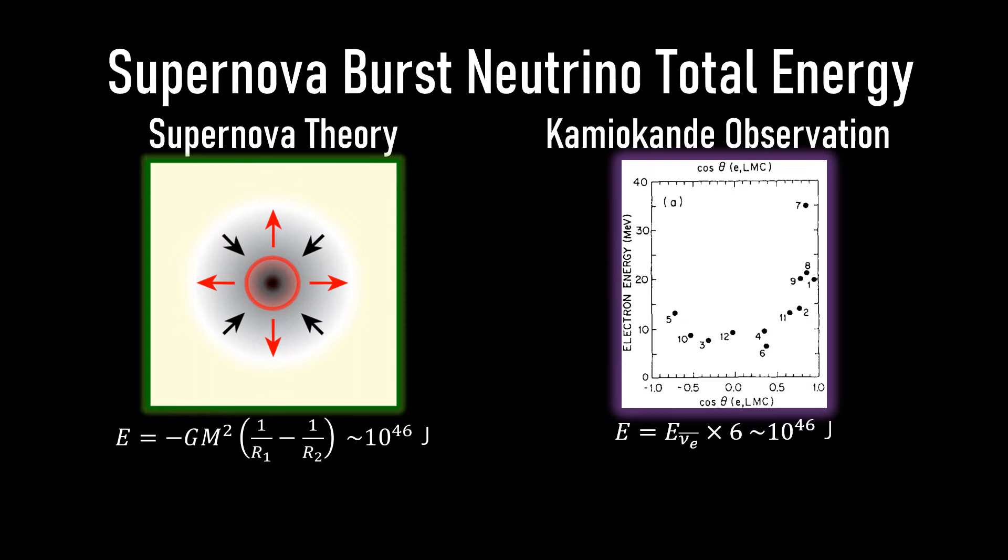Of the 10 to the 16th neutrinos hitting the Kamiokande experiment, only 12 were detected. The observed neutrino burst confirmed the supernova theory that an enormous number of neutrinos are emitted.